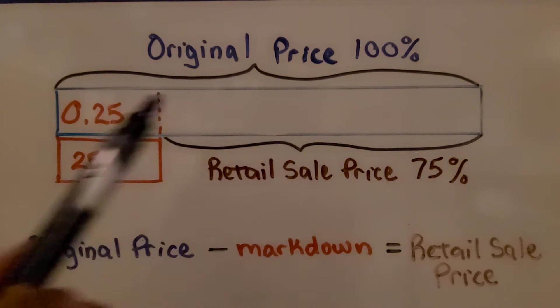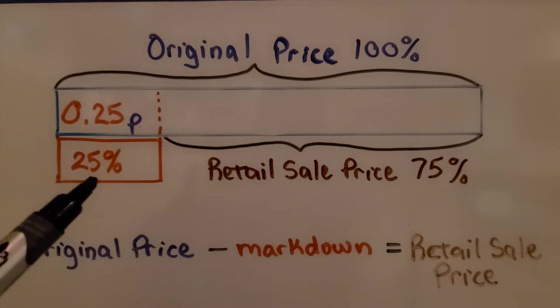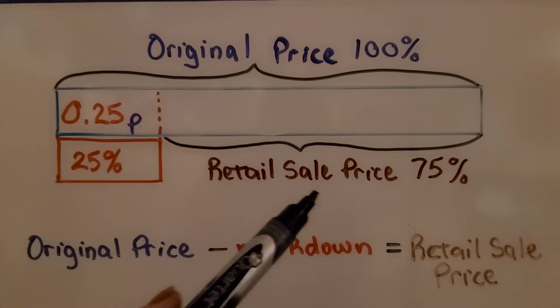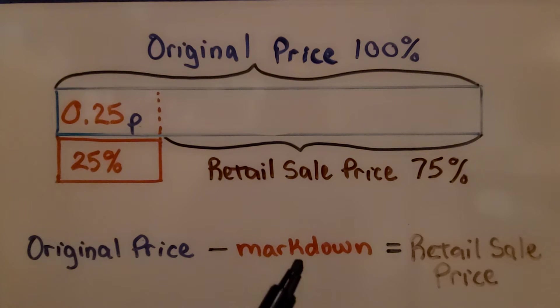If this is 100% when we take off the 25%, the retail sale price is going to be 75% of the original price. We have the original price minus the markdown is equal to the retail sale price.